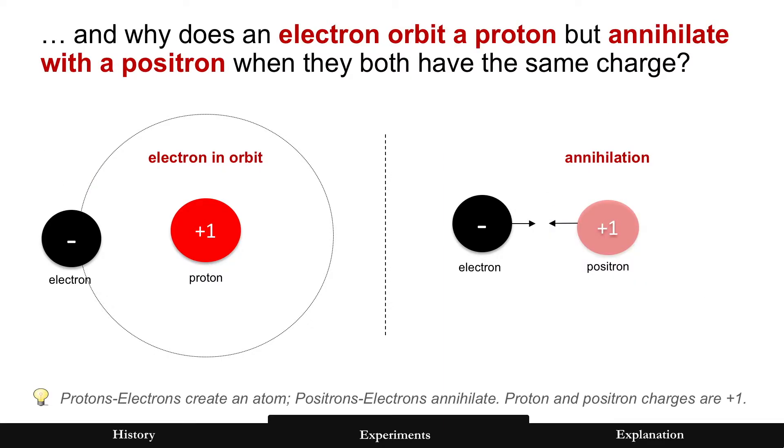And one more. Why does an electron orbit a proton? Like you see on the left, that's an atom. But when an electron meets a positron, they annihilate. Poof! They're gone. And they have the exact same charge. The proton and positron are both plus one. Why?